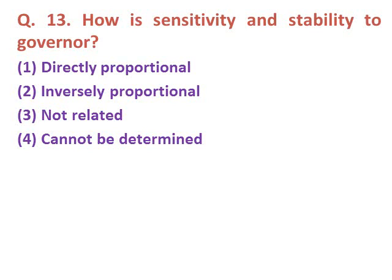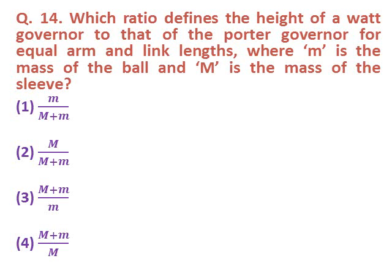Question thirteen: How is the sensitivity related to the stability of a governor? Option one: directly proportional. Option two: inversely proportional. Option three: not related. Option four: cannot be determined. The correct answer is inversely proportional — sensitivity and stability of a governor are inversely proportional to each other.